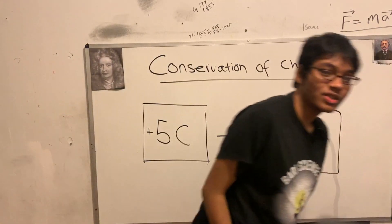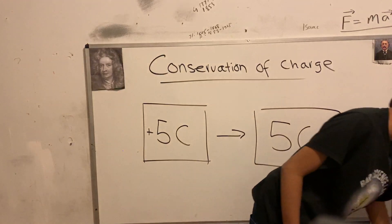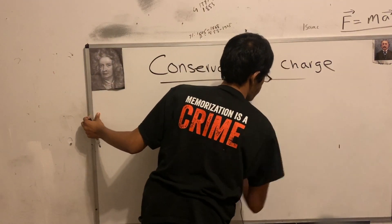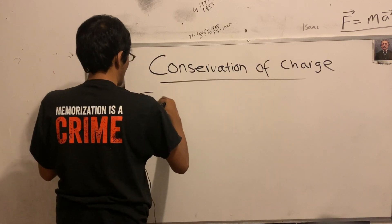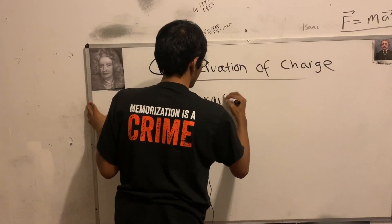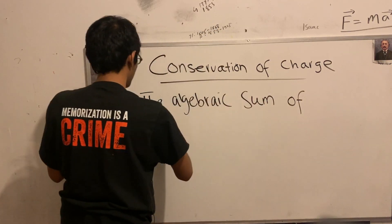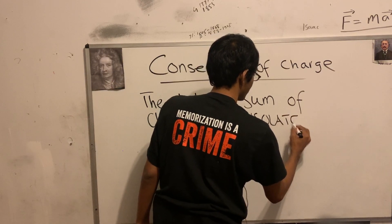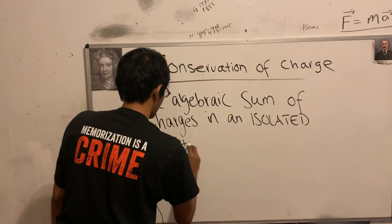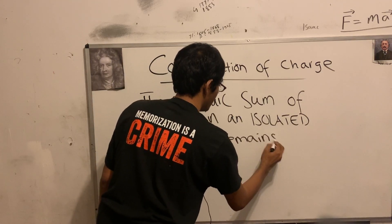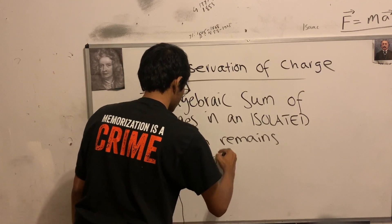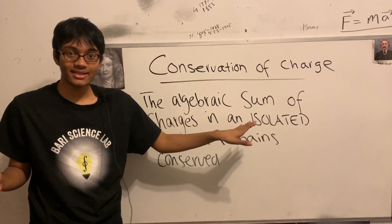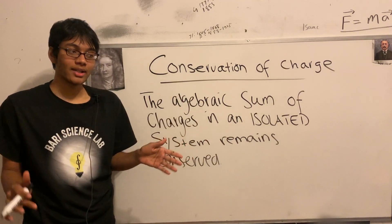We can formally state its definition as follows: the algebraic sum of charges in an isolated system — and isolated system is an important term — remains conserved. So that's what we mean by conservation of charge: the total sum of all charges in our isolated system, which allows no mass to enter or exit, is going to remain constant.